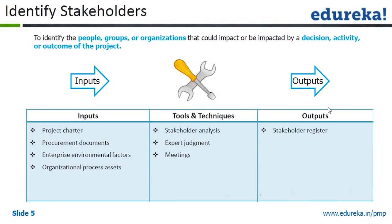To identify project people, groups, or organizations that could impact or be impacted by a decision, activity, or outcome is the identification of stakeholders. The inputs are the project charter, documents, procurement documents, enterprise environmental factors, and organizational process assets. Tools and techniques include stakeholder analysis, expert judgment, and meetings. The output is a stakeholder register.